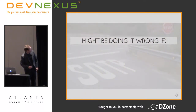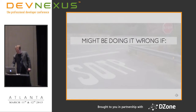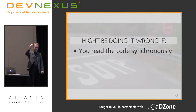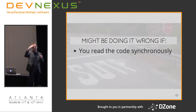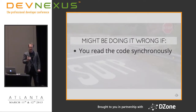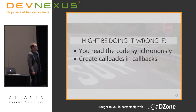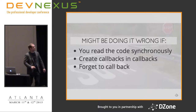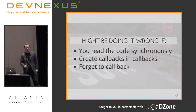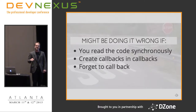Where can callbacks go wrong? First, reading code synchronously - you need to mentally set aside the callback and know it's not happening right now. Second, creating callbacks within callbacks: even one level is okay, but you're heading down the path. Third, failing to call the callback: if you have branch logic where one path never calls the callback, your code will just stall and nothing will happen - so always call that callback.